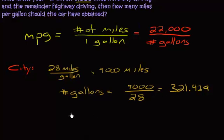multiply 28 and this, because right, you're getting 28 miles, and you're doing 321 gallons. Okay, so if you multiply those together, you'll get your 9,000 miles. So that's the city driving.